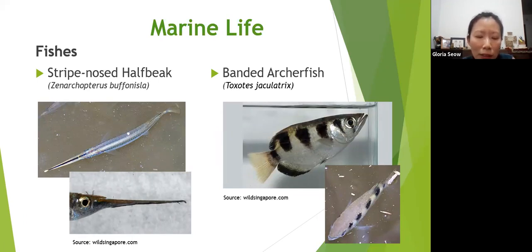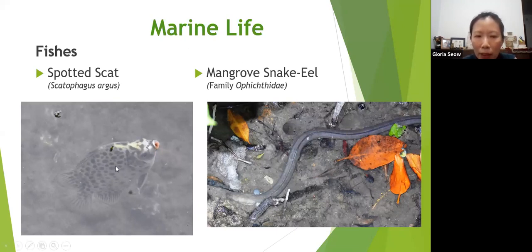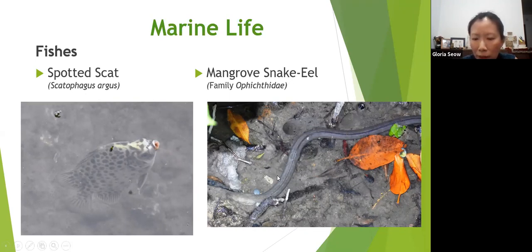There is also the spotted scat, also known as Scatophagus — scat being another word for faeces, as it can eat faeces though it also eats normal things. The mangrove snake eel, photographed at night in Pasir Ris Park, looks like a snake but is actually an eel. You can tell it apart from a snake by looking for the two small fins on its body.